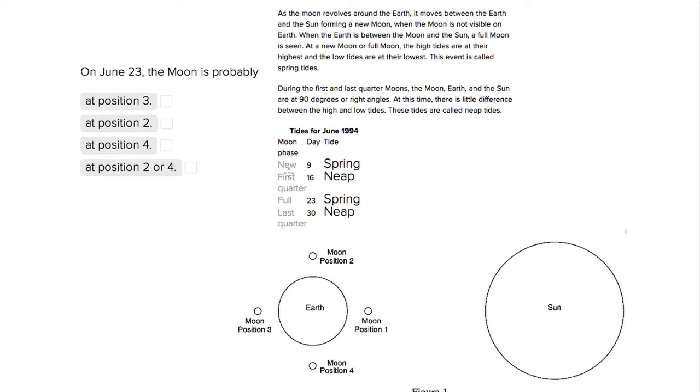This is Sophie Heller and this is an ACT science question. The question is asking us on June 23rd where is the moon in this position diagram? So let's look at our chart.